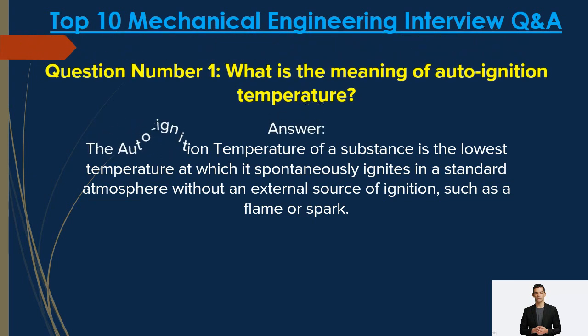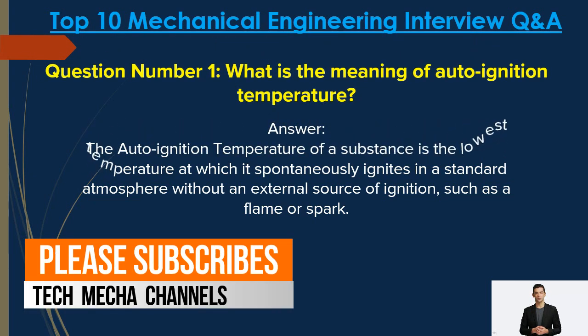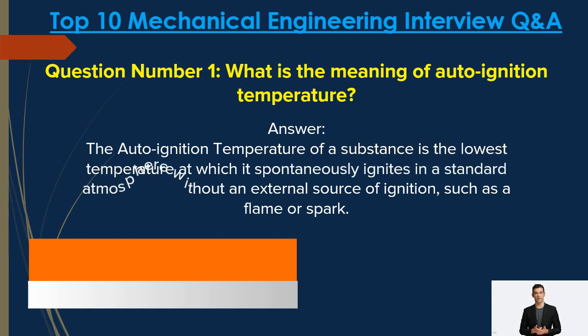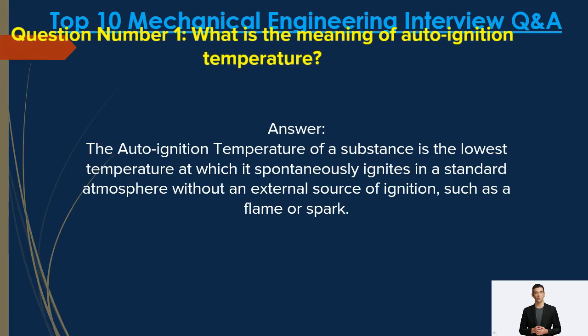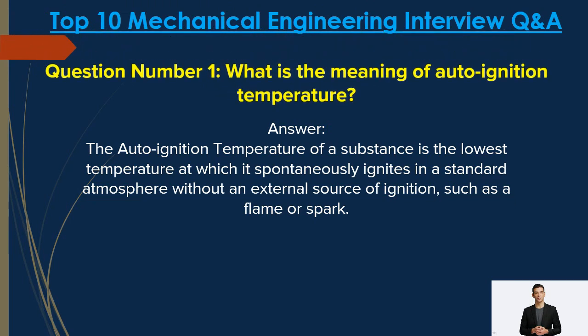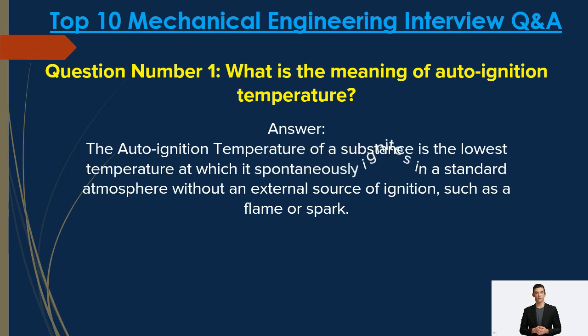Question number one: What is the meaning of auto-ignition temperature? Answer: The auto-ignition temperature of a substance is the lowest temperature at which it spontaneously ignites in a standard atmosphere without an external source of ignition such as a flame or spark.